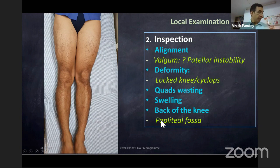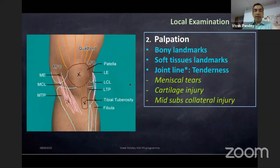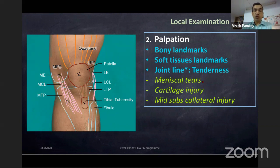A flexion deformity where the knee cannot be completely extended — we call it a locked knee — is where rest of flexion is possible but complete extension is not. On palpation, always check three important things: bony landmarks, soft-tissue landmarks, and joint-line tenderness. Joint-line tenderness could be due to meniscal tear, cartilage injury, or mid-substance collateral ligament injury.